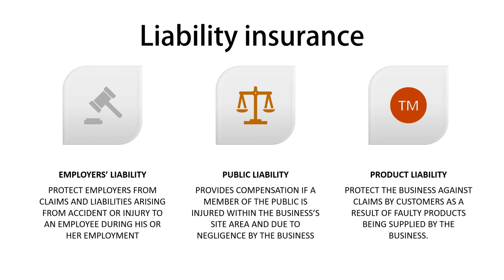There are three types of liability insurance. Employers' liability insurance protects employers from claims arising from accidents or injury to an employee during employment — the insurance company will pay compensation to your employee on your behalf. Public liability insurance provides compensation if a member of the public is injured within the business's premises due to negligence by the business. Product liability insurance protects the business against claims by customers as a result of faulty products supplied by the business.